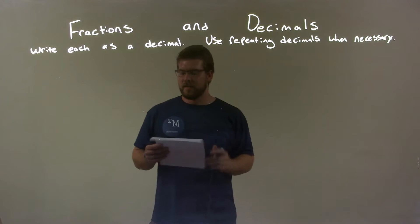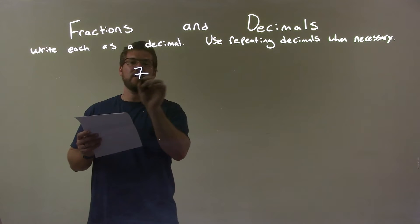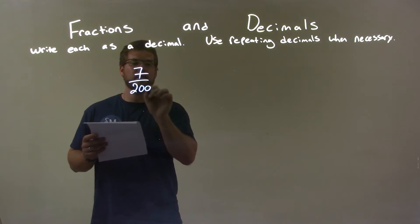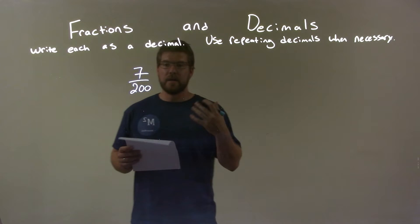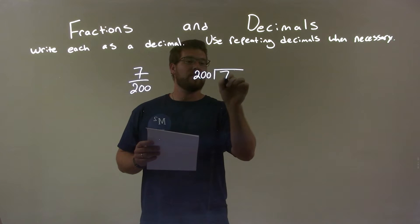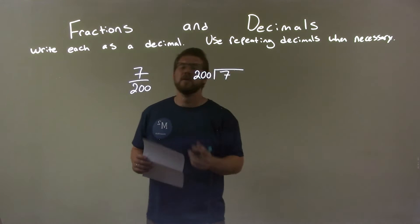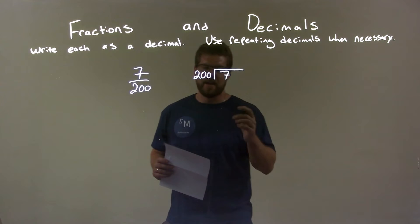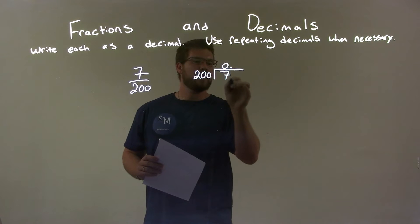If I was given this fraction, 7 into 200, I'm going to do long division. Does 200 go into 7? No, it can't. So we're going to add another place value.